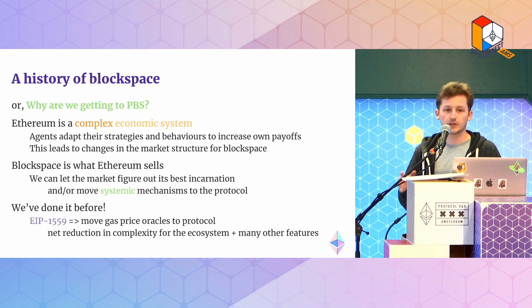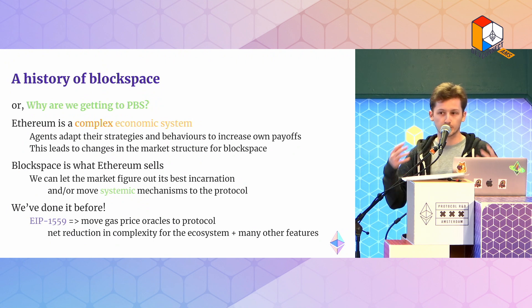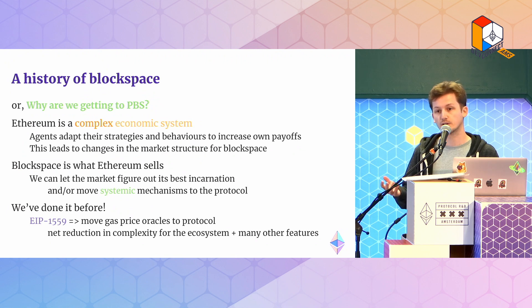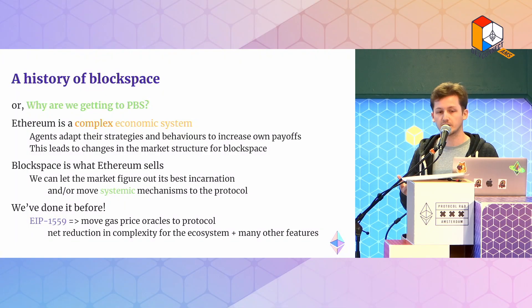To understand PBS, we have to understand the history of block space. Ethereum is a protocol that sells block space, but it's also a protocol that secures a lot of digital assets that have value. People who interact with the protocol are going to adapt their behavior and develop market structures that allow them to make better use of that block space. Some of these market structures are out of protocol, but when they become systemic, it might be a good idea to be proactive and move these things into protocol. That's kind of the long story of PBS. We've done it before — for instance, with EIP-1559, we decided the ad hoc market we had was not as optimal as it could be, so we moved things like pricing into the protocol, which provides a net reduction in complexity and many other features.